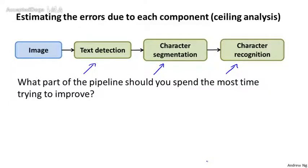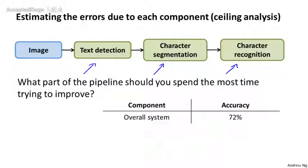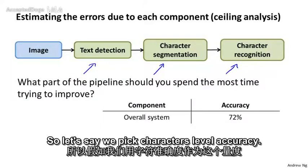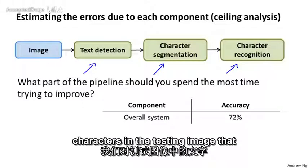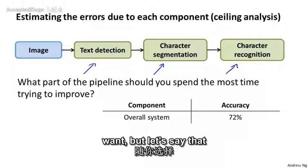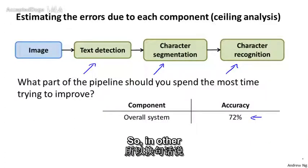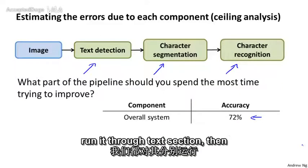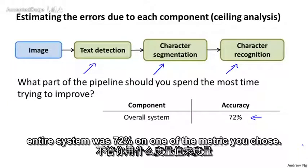Here's the idea of ceiling analysis. As with other machine learning systems, it will be very helpful to have a single real-number evaluation metric for the learning system. Let's say we pick character-level accuracy: given a test set image, what fraction of characters do we recognize correctly? Let's say that for whatever evaluation metric we pick, we find that the overall system currently has 72% accuracy. We have some test set images, and for each one, we run it through text detection, then character segmentation, then character recognition, and find 72% overall accuracy.